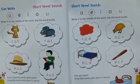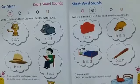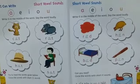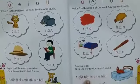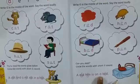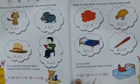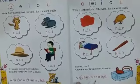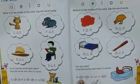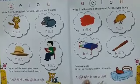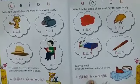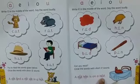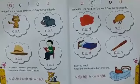Read the last sentence given at the bottom children. Shall we read it once? A red hen is on a bed. We will read it once again. A red — R, E, D — Red. H, E, N — Hen is on a bed. That is what is written here.